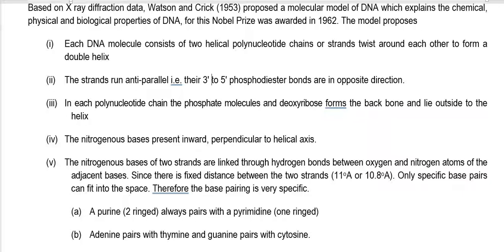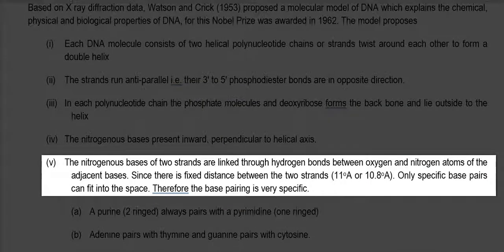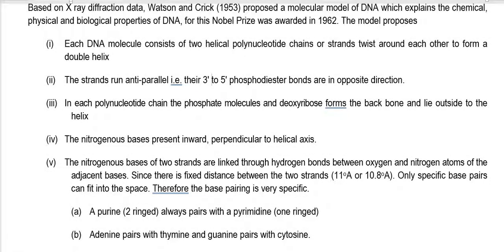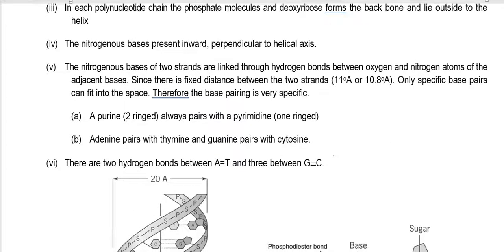The nitrogenous bases of the two strands are linked together by hydrogen bonds that form between the oxygen and nitrogen atoms of adjacent bases. Since there is a fixed distance between the two strands — approximately 10.8 to 11 Angstroms — only specific bases can fit into that space between the two polynucleotide chains. It is always a purine, a two-ringed molecule, pairing with a pyrimidine, a single-ringed molecule.